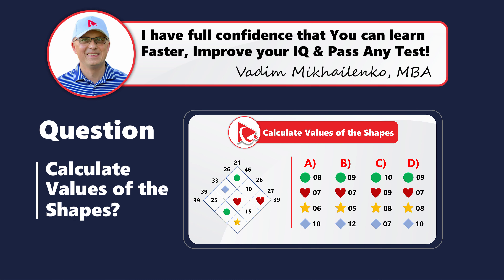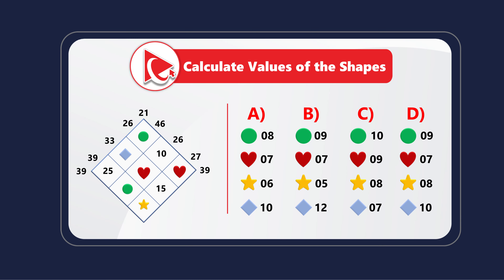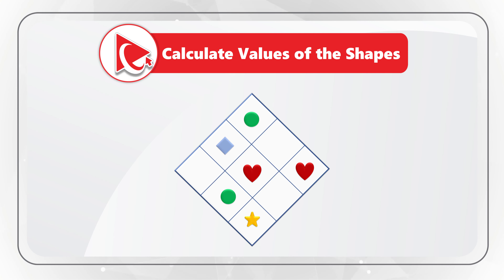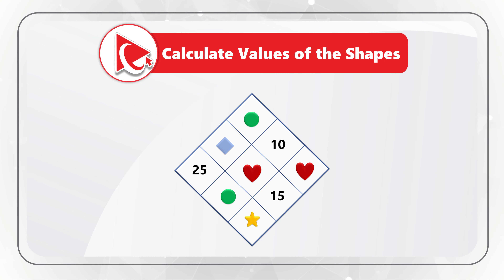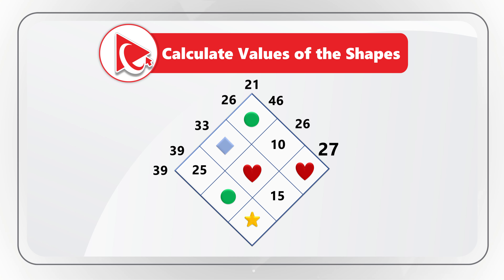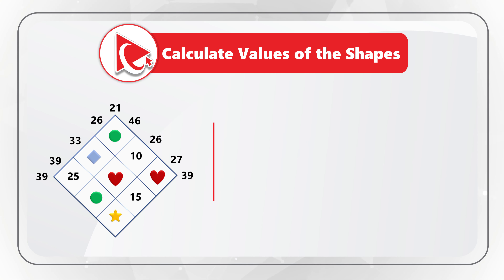Here's an amazing problem to test your analytical and business math skills. You're presented with a diamond that has shapes inside, along with numbers 25, 10, and 15 in some cells. On the outside of the diamond, starting from 9 o'clock, the numbers are 39, 39, 33, 26, 21, 46, 26, 27, and 39. You need to calculate the values of the shapes and select the correct answer. Choice A: 8, 7, 6, 10. Choice B: 9, 7, 5, 12. Choice C: 10, 9, 8, 7. Choice D: 9, 7, 8, 10 — for circle, heart, star, and diamond respectively.